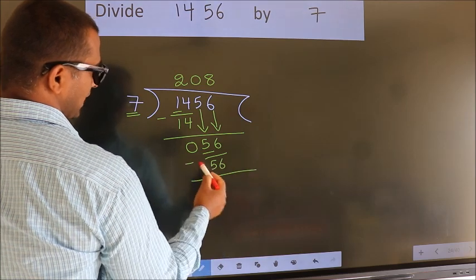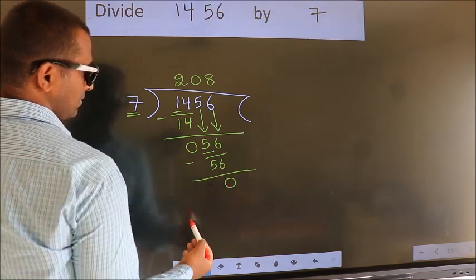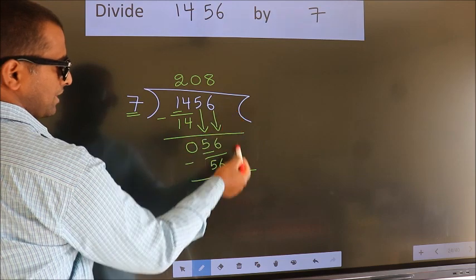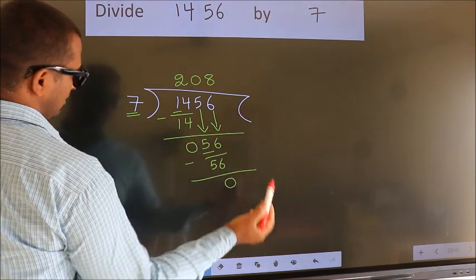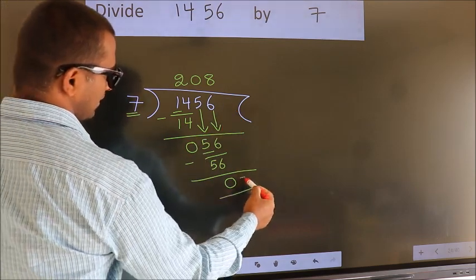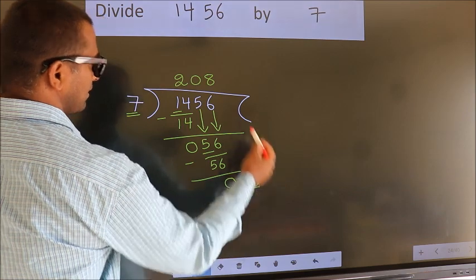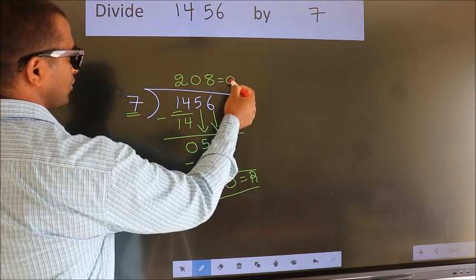Now we subtract. We get 0. No more numbers to bring it down. So we stop here. This is our remainder. This is our quotient.